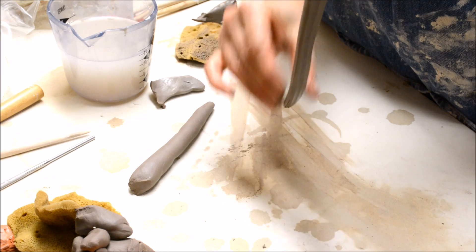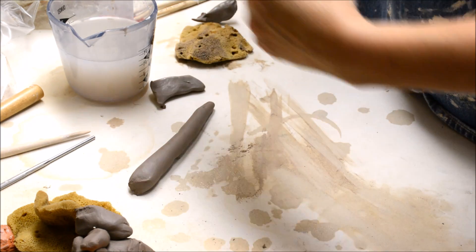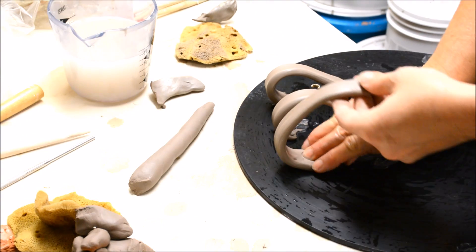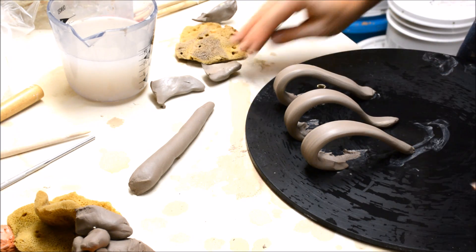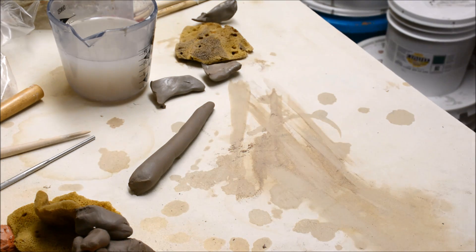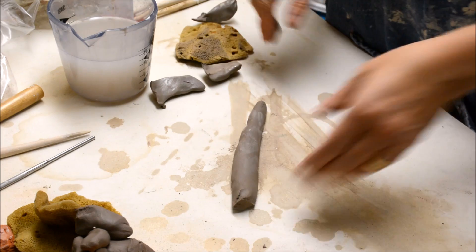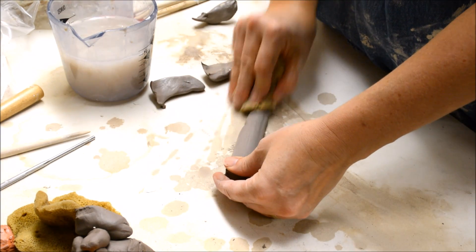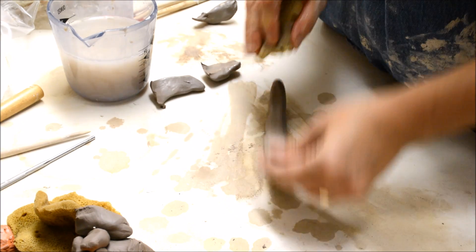I always smooth out the sides, and then I'll bend it around and set it on my tray. For my students, we can use those plastic trays that are in the classroom, or you can use a plastic bat. Just don't put it directly on wood.